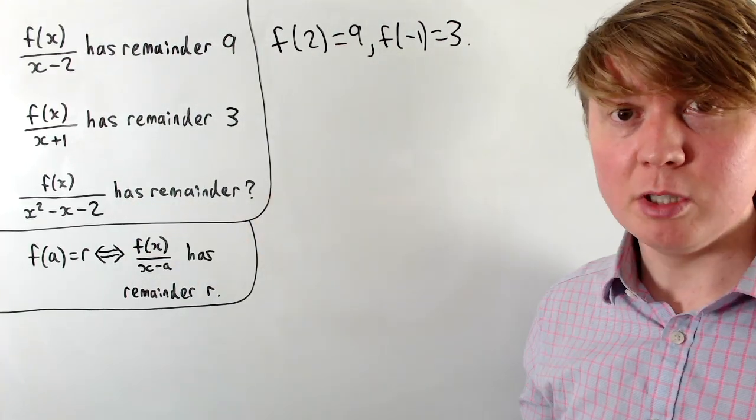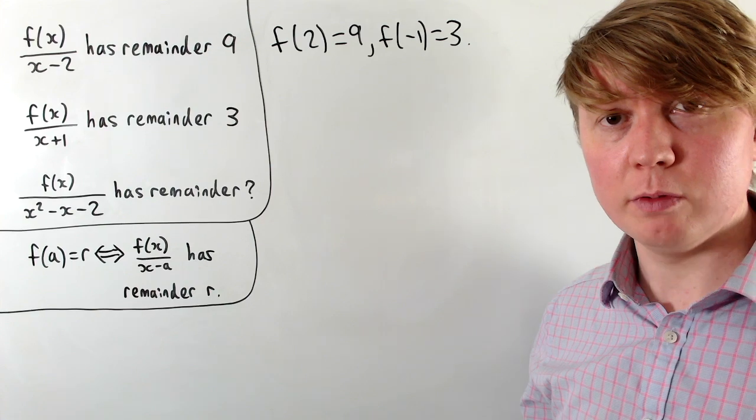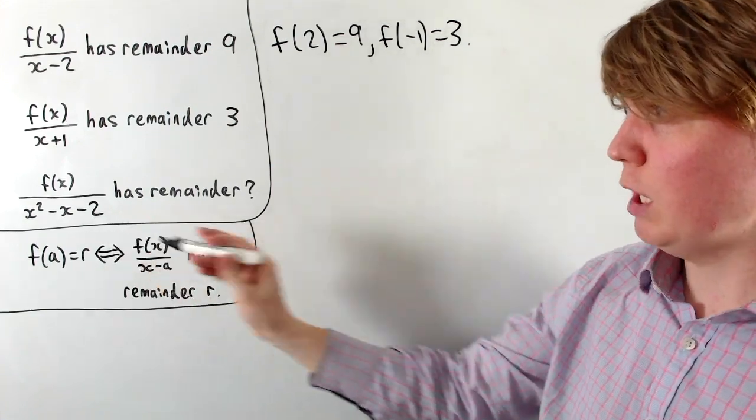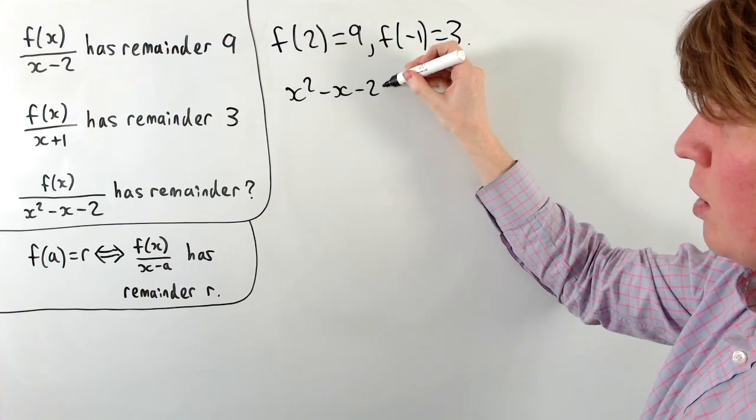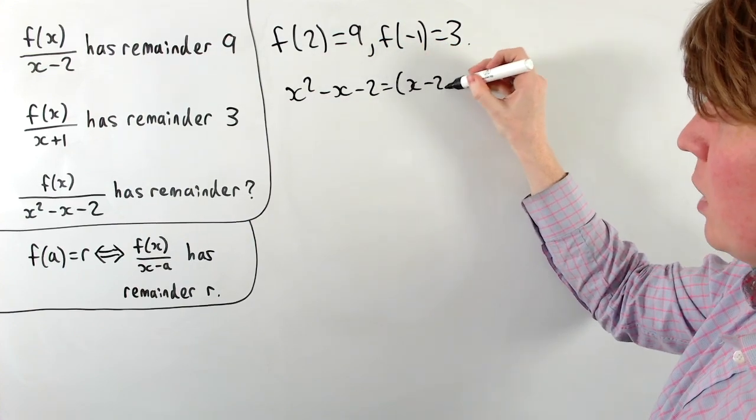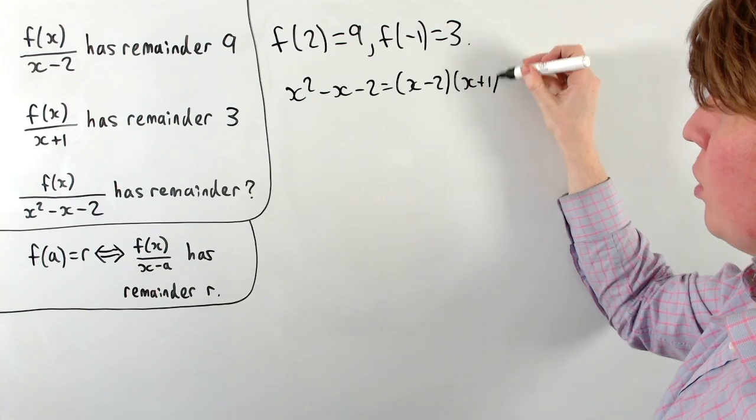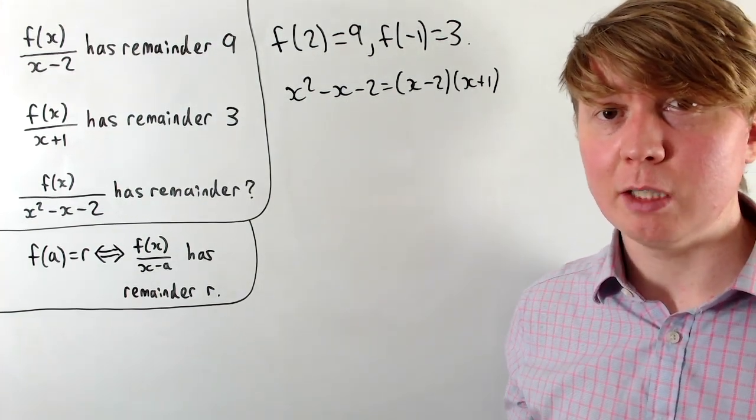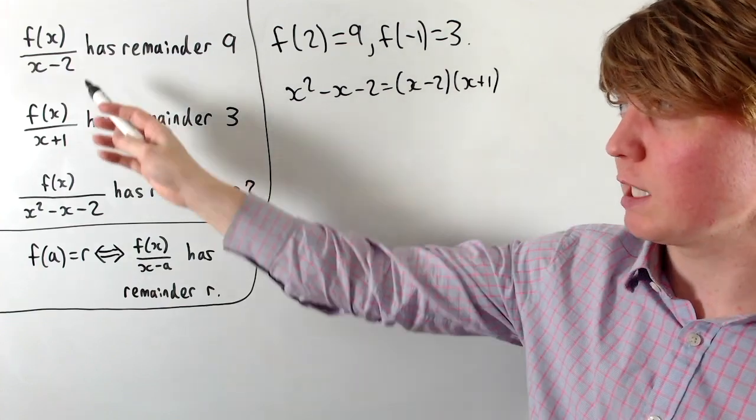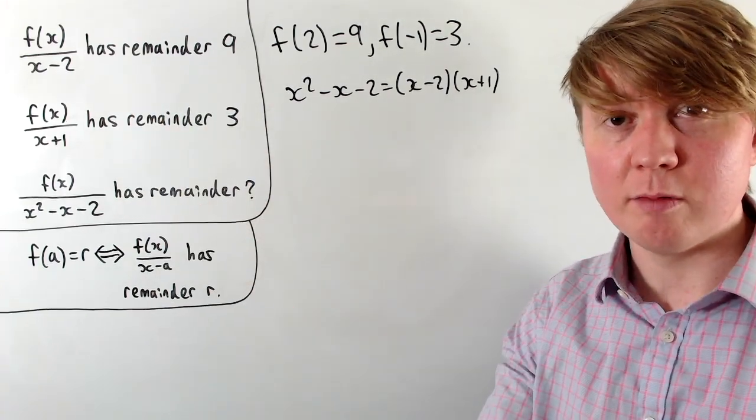But now things get interesting when we divide by a quadratic. First of all, you may have spotted this quadratic when we factorize this, and write it as x squared minus x minus 2 equals x minus 2 times x plus 1. And this is crucial, actually, to being able to solve this problem. When we factorize this, our two linear terms are exactly the linear terms that we've divided by.